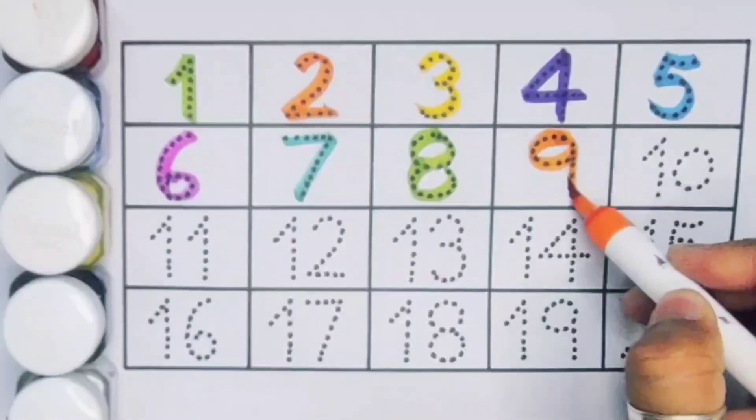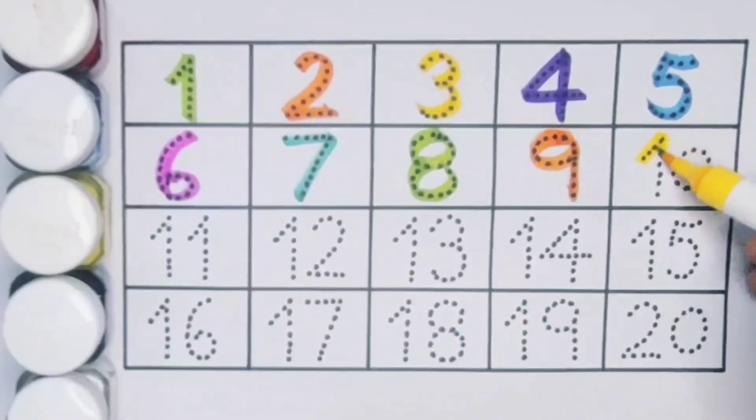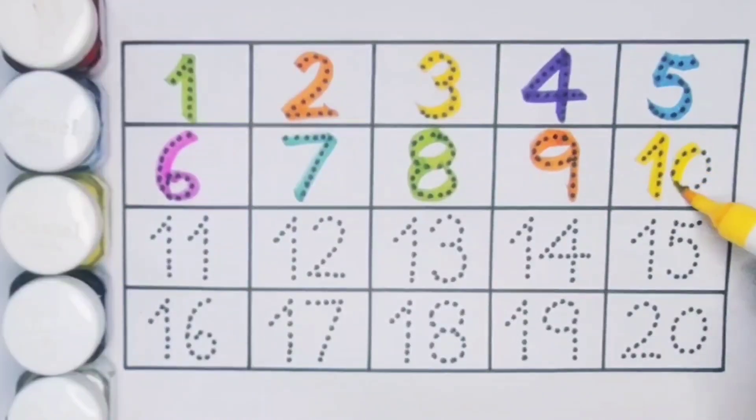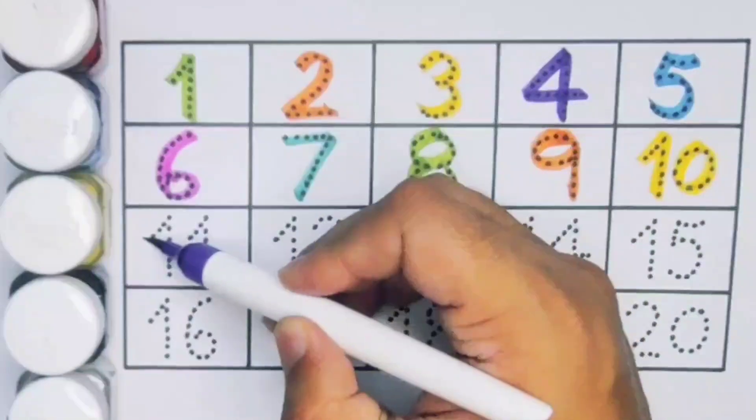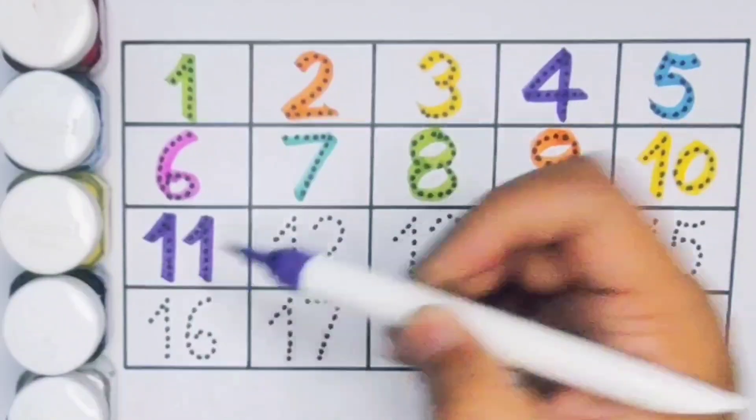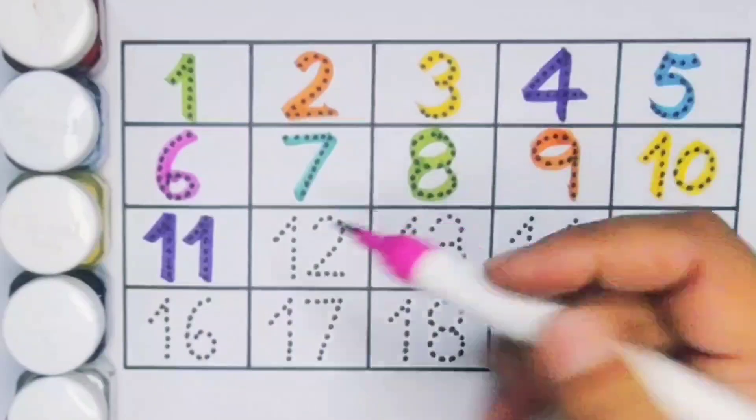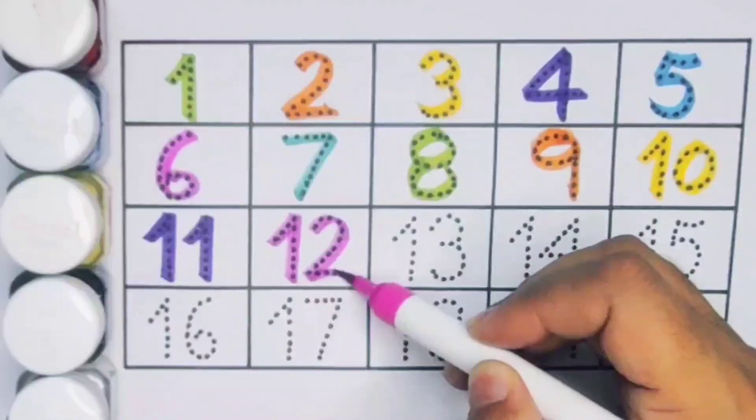Next case ten, number ten. Next case eleven, one one, eleven, number eleven. Next case twelve, one two, twelve, number twelve.